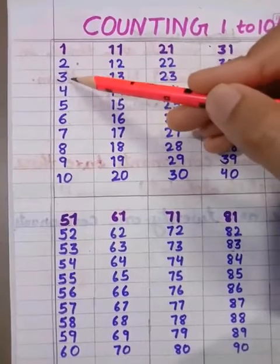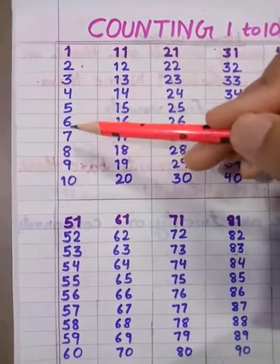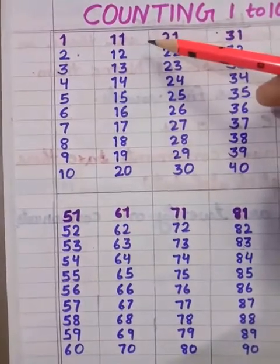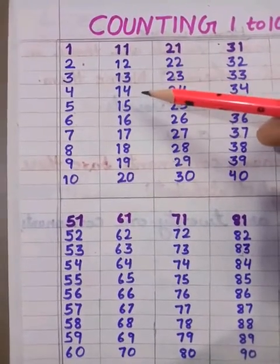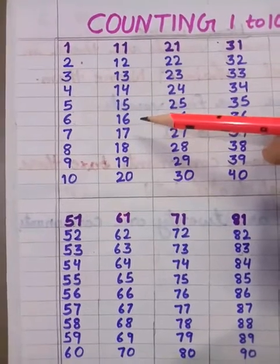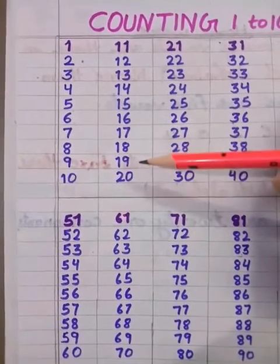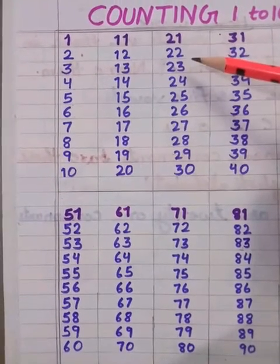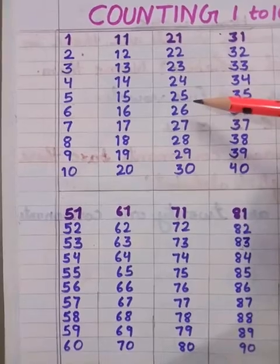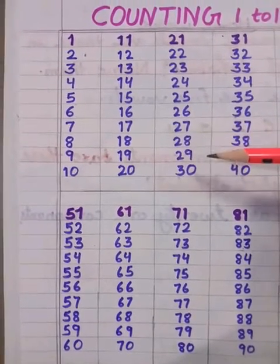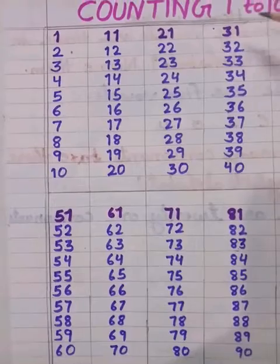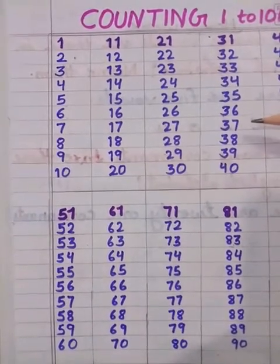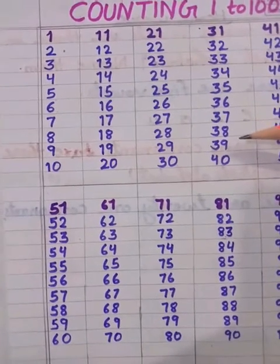1, 2, 3, 4, 5, 6, 7, 8, 9, 10. 11, 12, 13, 14, 15, 16, 17, 18, 19, 20. 21, 22. Similarly, 23, 24, 25, 26, 27, 28, 29, 30. 31, 32, 33, 34, 35, 36, 37, 38, 39, 40.